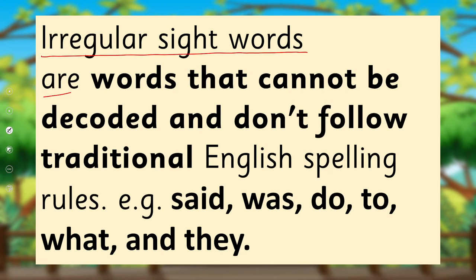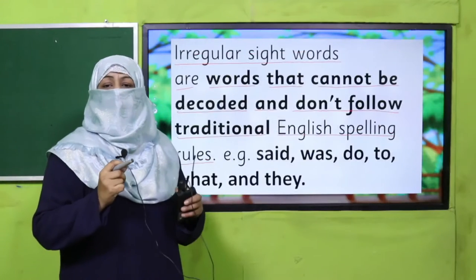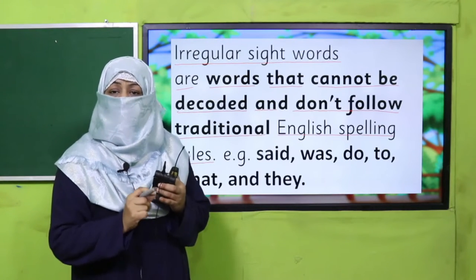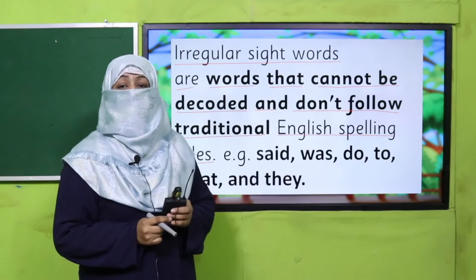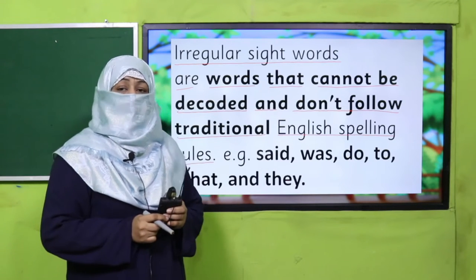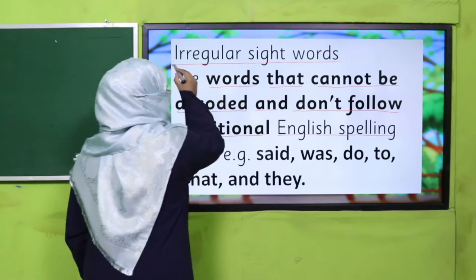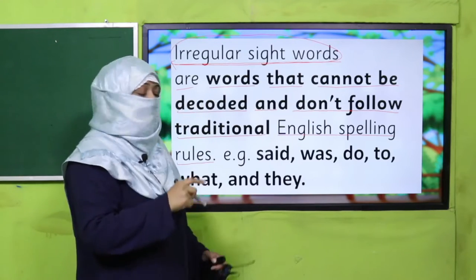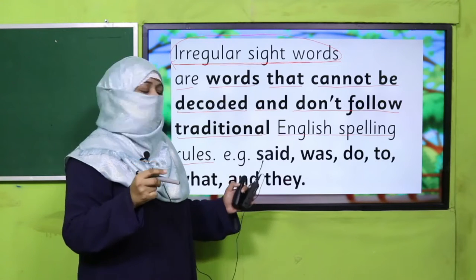Irregular sight words are words that cannot be decoded and don't follow traditional English spelling rules. So how do we read a word? As I've taught you, we pronounce individual sounds, blend the sounds, and say the word. But there are a few words which we cannot read with this pattern — those words are known as irregular sight words.